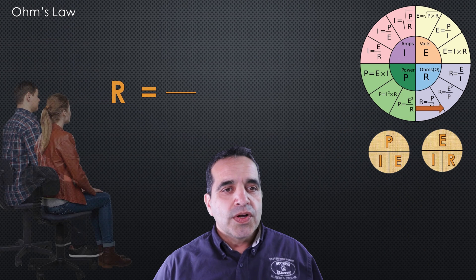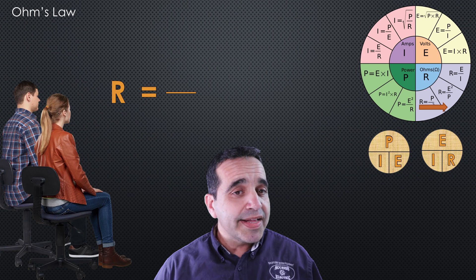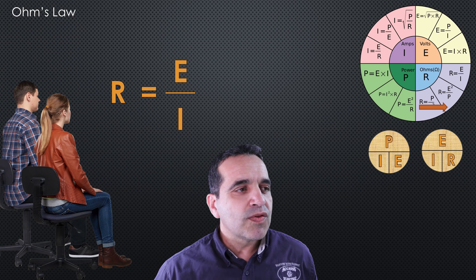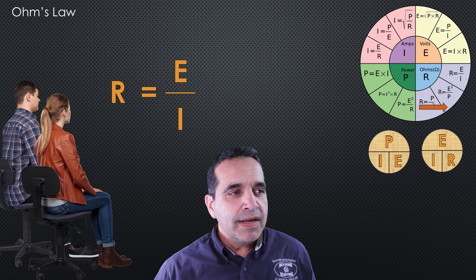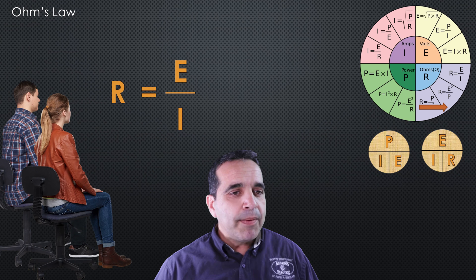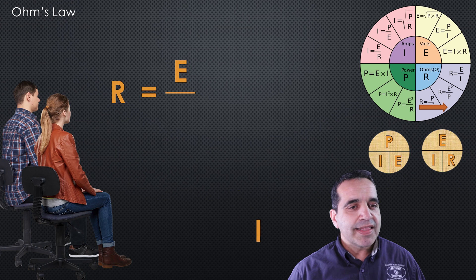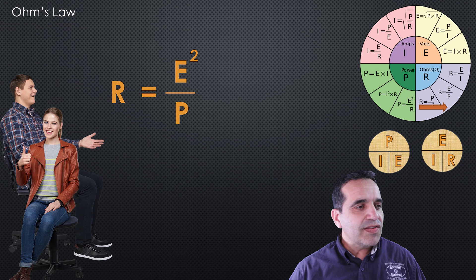Next, how do we find resistance if voltage and wattage are known? We start with R equals E over I. We have resistance and voltage, but we don't need amperage. We know amperage equals wattage divided by voltage, so we replace I with P over E. The E's square, and we get R equals E squared over P.